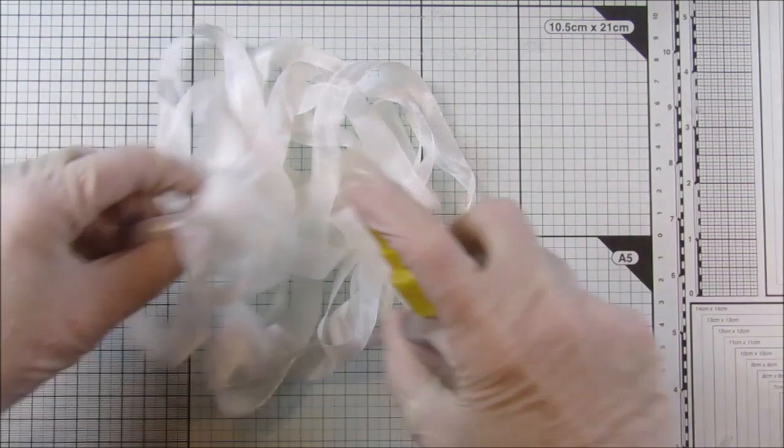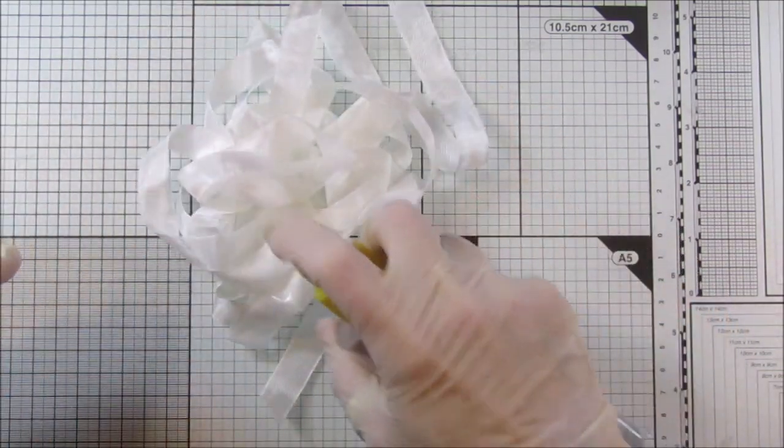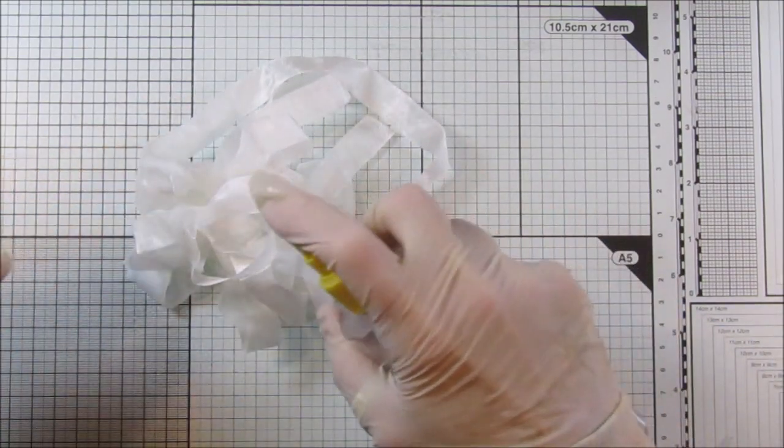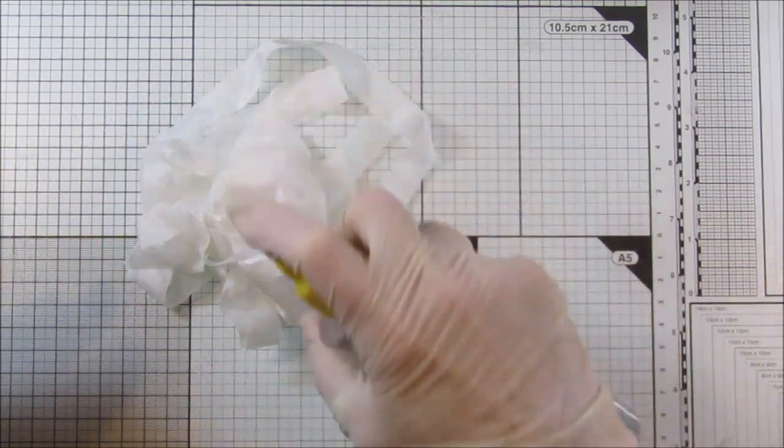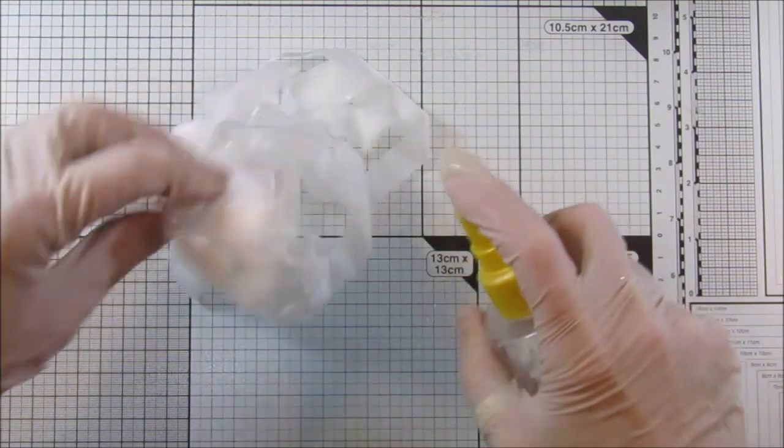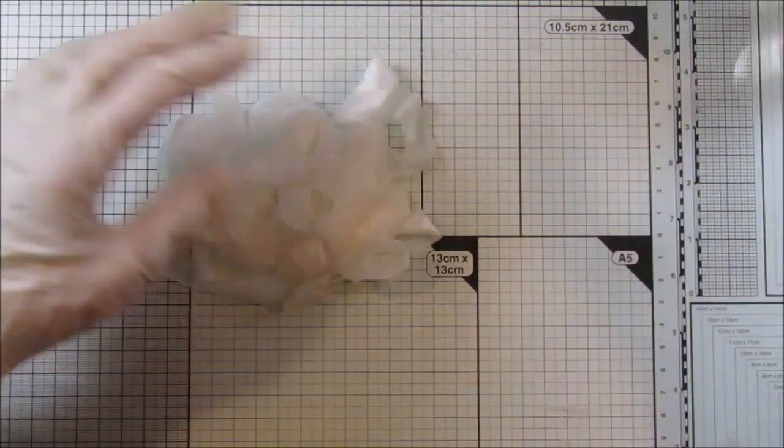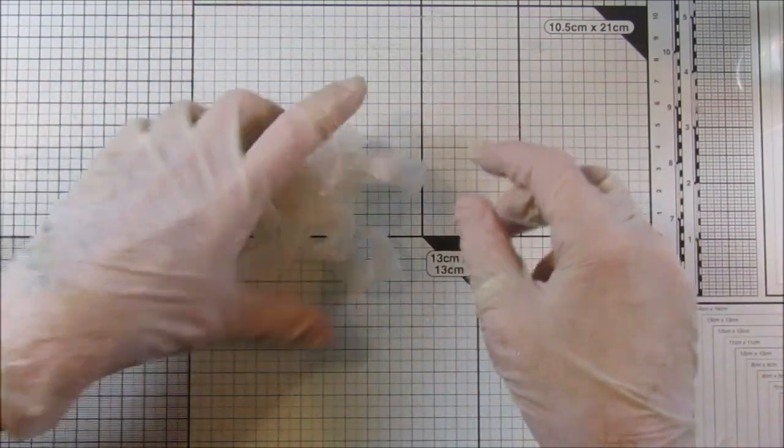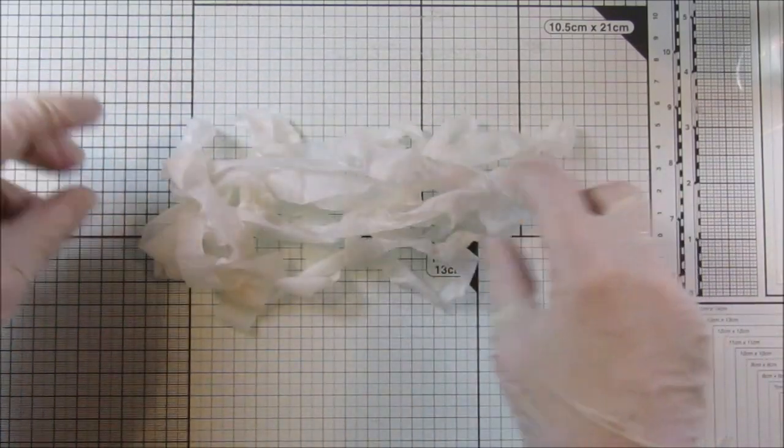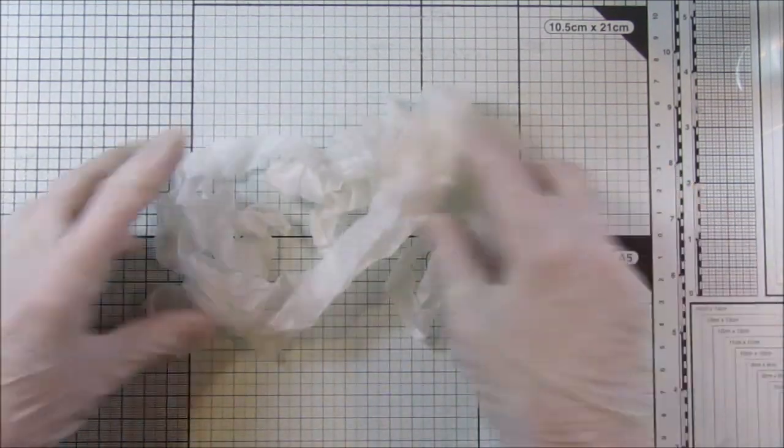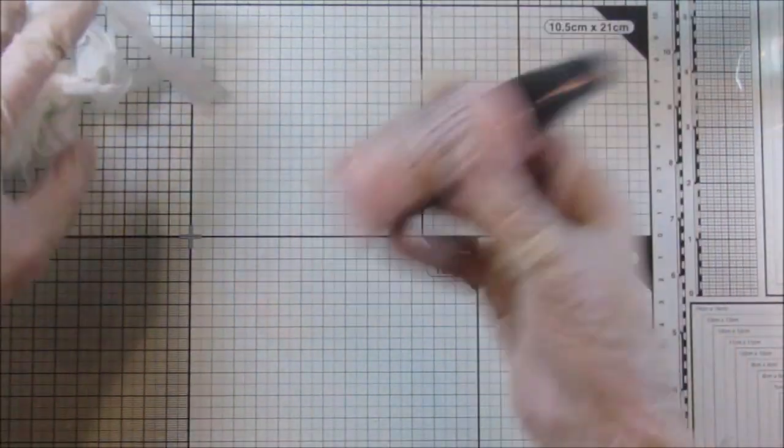So I'm going to use this one here. Now what I do to start with, I actually wet the seam binding because it seems to take the color a little bit better than just popping it on to dry seam binding. So you can do the same method with cheesecloth and everything. If you've got any cheesecloth, you can use that as well, and you get matching colors.